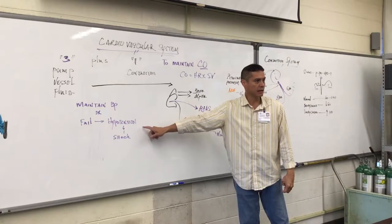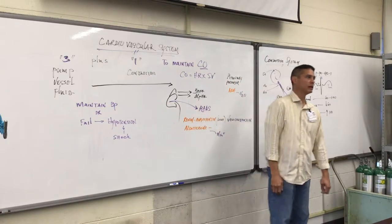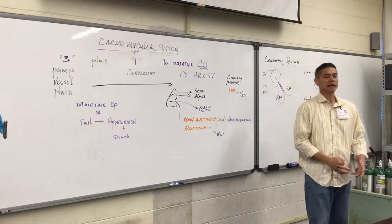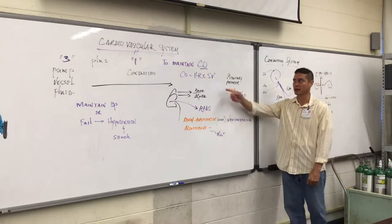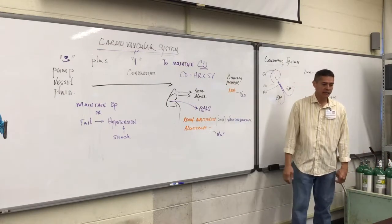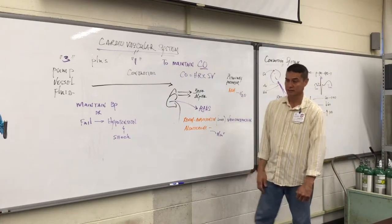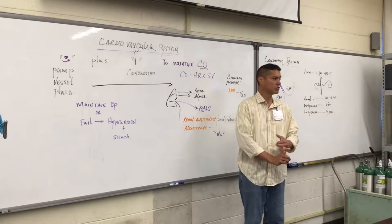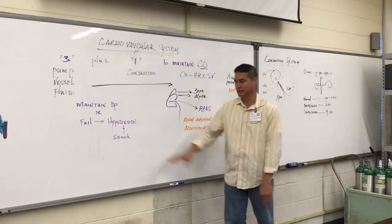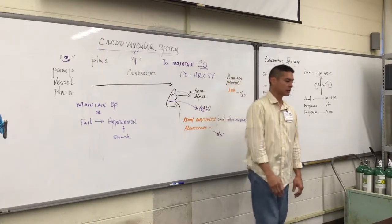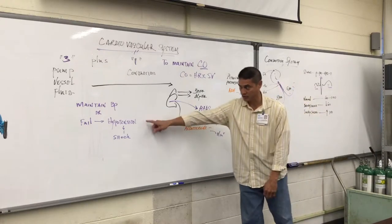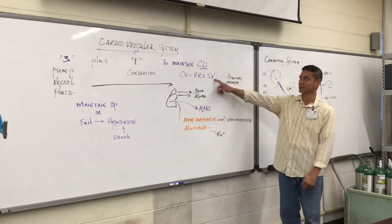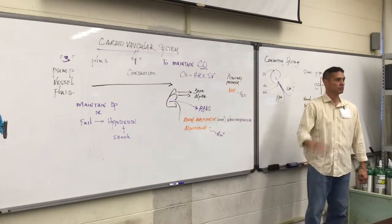But they're developing hypotension. The way that we determine in the field setting at our level of training when cardiac output is inadequate is when they start to show signs of the sympathetic nervous system kicking in: tachycardia, pale cool and diaphoretic skin signs, and then you might see changes in their mental status. Hypotension should significantly indicate that the cardiac output is not being able to be maintained.